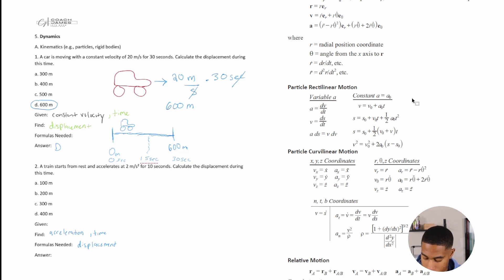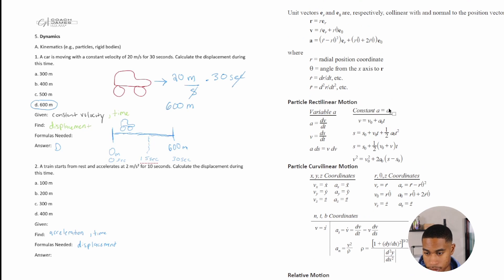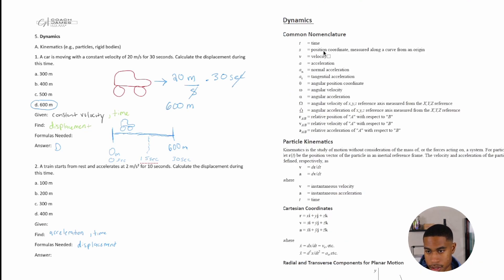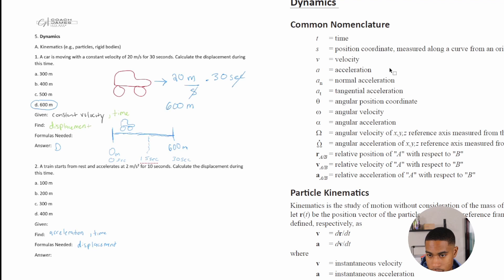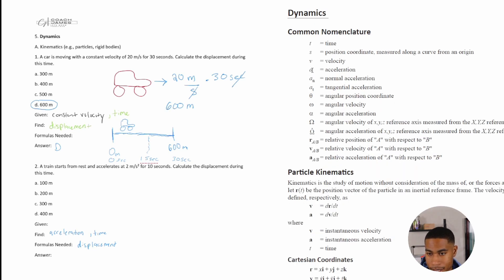If you're not familiar with the symbols on the exam, start here. 's' stands for position coordinate — s₀ is the initial position and s is the final position. Similarly, t_f is the final time and t₀ is the initial time. Acceleration is represented by 'a', velocity by 'v'. When calculating displacement, look for 's' because it represents position or distance from an origin.